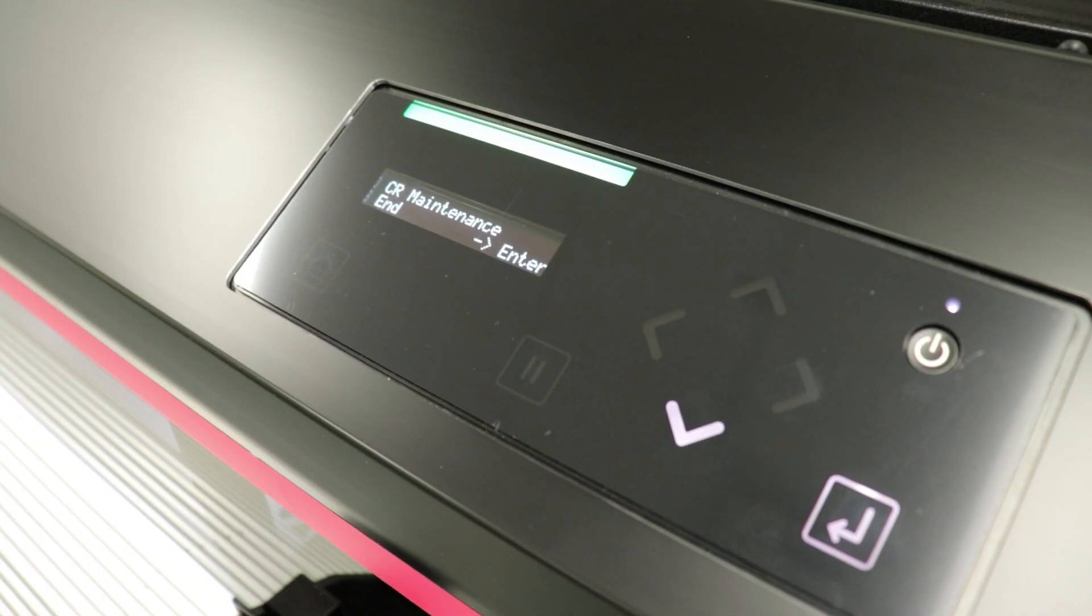To end CR maintenance, it's very easy. Press the enter button. This will shuttle the carriage back to the home position.